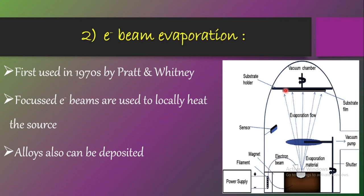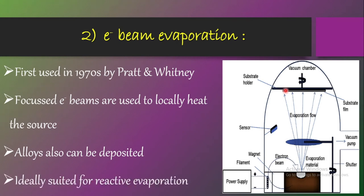If you heat any alloy using resistive heating, the composition or constituents may separate or dissociate. But with the electron beam approach, alloys will not be dissociated into constituent elements, so thin films of alloys can also be deposited. This technique is also ideally suited for reactive evaporation of oxides, nitrides, etc. This is the detail of the second approach — using an electron beam to heat the target material.